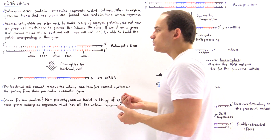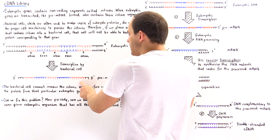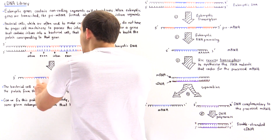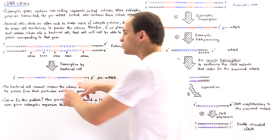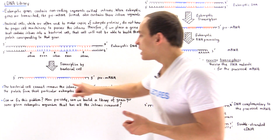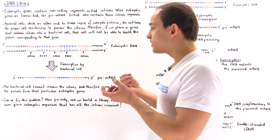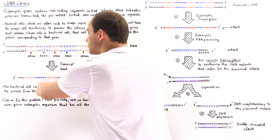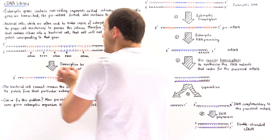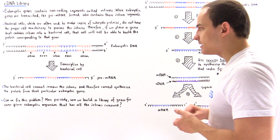The bacterial cell will be able to use special proteins to transcribe the DNA into a pre-mRNA, but it will not be able to remove the intron sections from this mRNA. Because only the blue sections are necessary to form that particular protein, and because the bacterial cell has no way of removing the orange sections and splicing together the blue sections, that bacterial cell will not be able to form any useful protein.